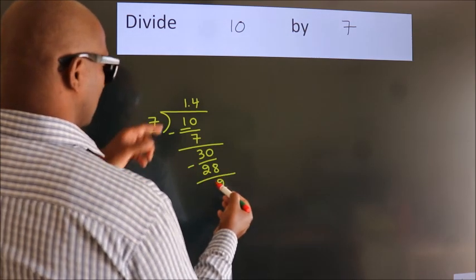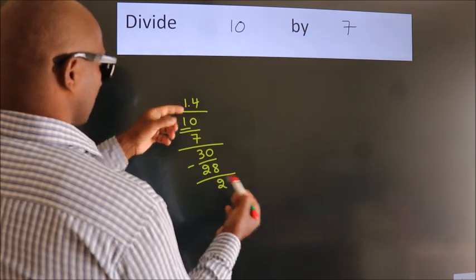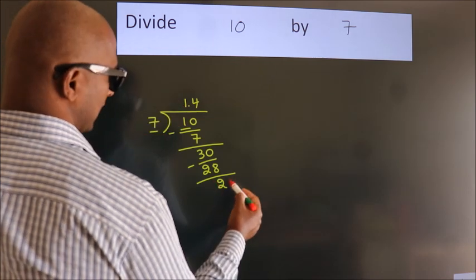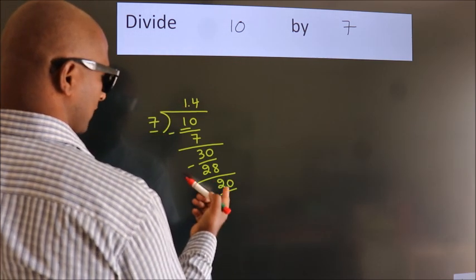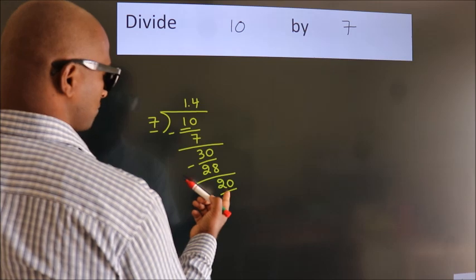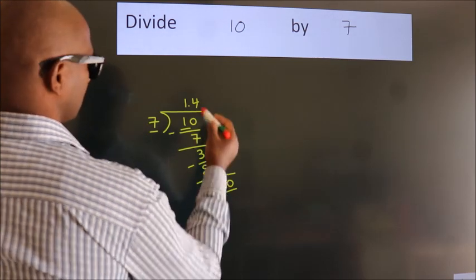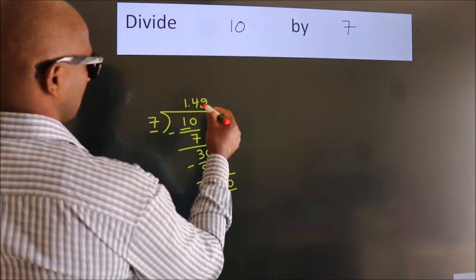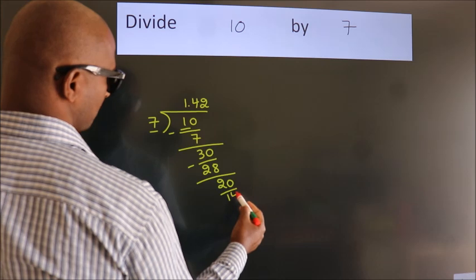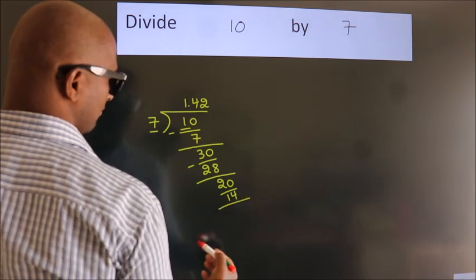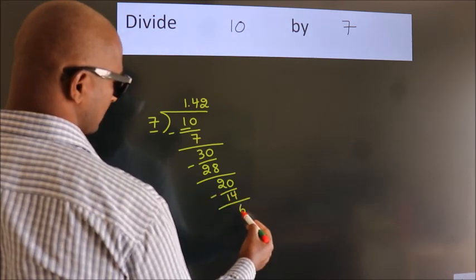After this, we already have the decimal, so directly take 0. So we have 20. A number close to 20 in the 7 table is 7 twos, which is 14. Now we subtract. We get 6.